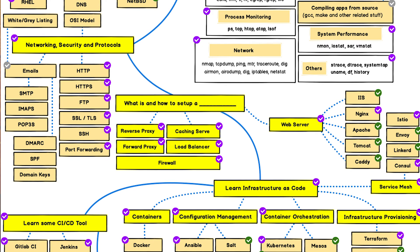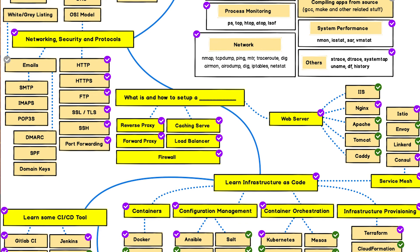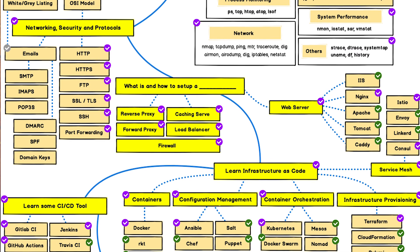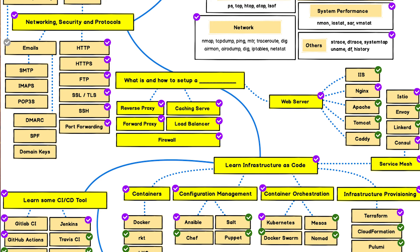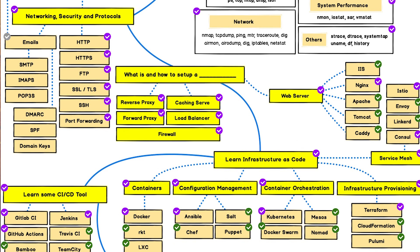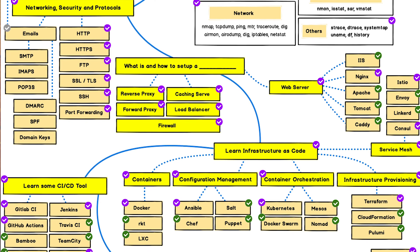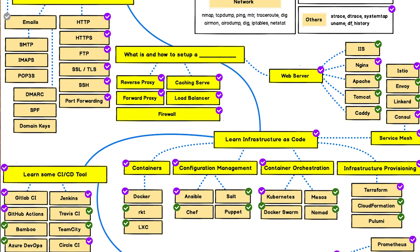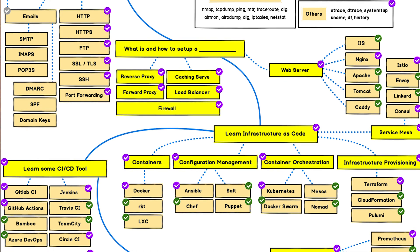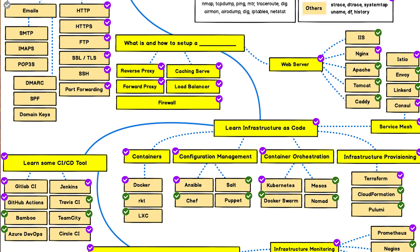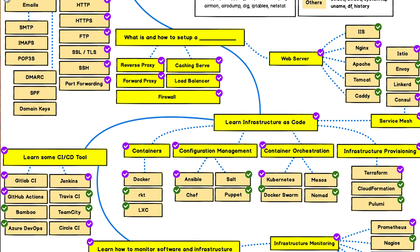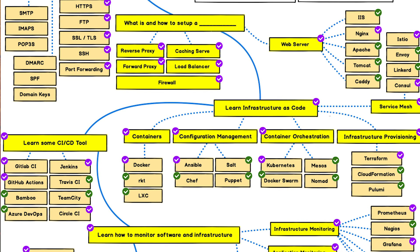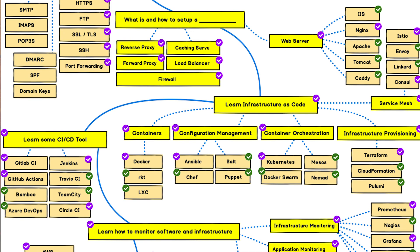Infrastructure as Code has been playing a vital role in DevOps for faster and continuous deployment. Teams should develop skills in container-based deployment tools like Docker, RKT, and LXC. Configuration management and auto-deployment tools like Ansible, Chef, Puppet, and SaltStack are essential. Container orchestration tools like Kubernetes, Docker Swarm, Mesos, and Nomad must also be learned. For infrastructure provisioning, Terraform and CloudFormation are required.